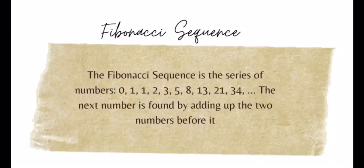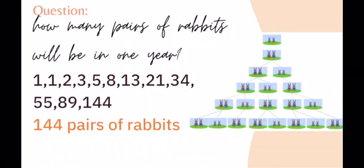The Fibonacci sequence is the series of numbers: 0, 1, 1, 2, 3, 5, 8, 13, 21, 34, and so on. The next number is found by adding up the two numbers before it.